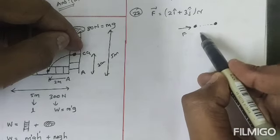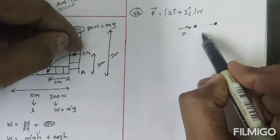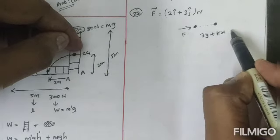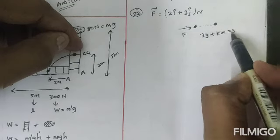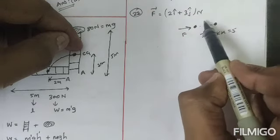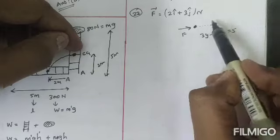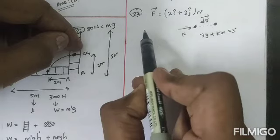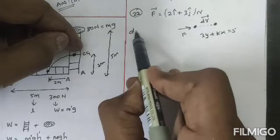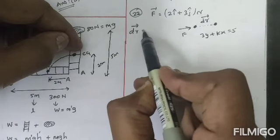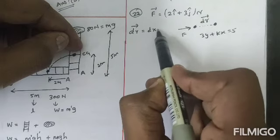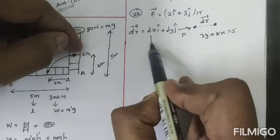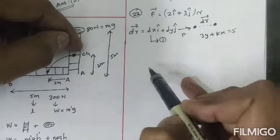That line equation is given. We consider that as 3y plus kx is equal to 5, so it is like a displacement. You know that displacement vector, that is d vector. We know that displacement vector we can write as dr vector is equal to dx i cap plus dy j cap. This is equation number one.